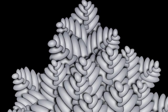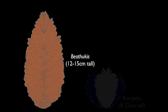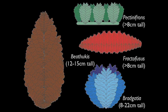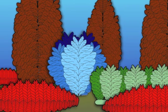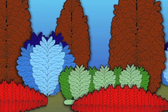These frondlets branch in different ways to create all these different forms of rangiomorphs that come in different sizes. And while scientists aren't sure what these organisms are, they hypothesize that they lived in communities on the ocean floor and were using these branches to increase their surface area, which helped them directly absorb the nutrition they needed from the surrounding ocean water.